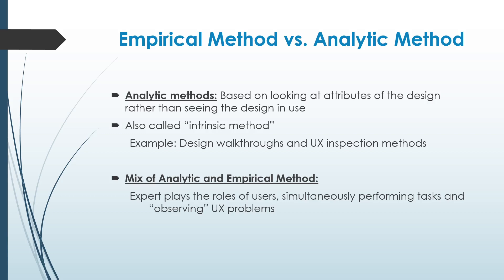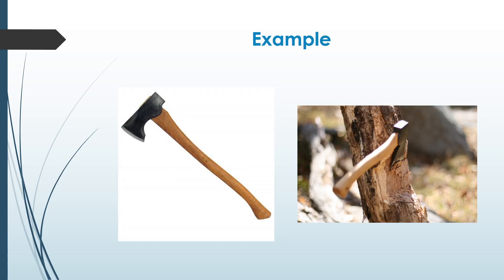When I consider UI evaluation, I consider a mixture of both analytic and empirical. In the diagram, if we see an axe — if I describe the axe as made of wood, having a certain shape, and being more sharp, that becomes my analytical method. But if I say the axe is used to cut a tree, give shape, or make work faster, that becomes empirical. So when I evaluate, I consider both analytical as well as empirical.